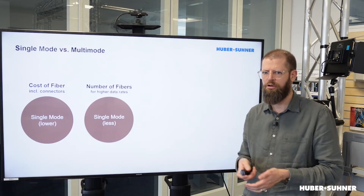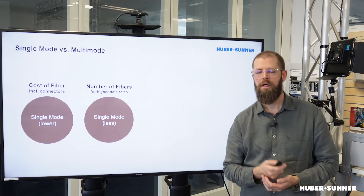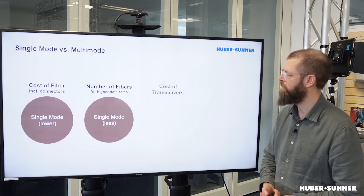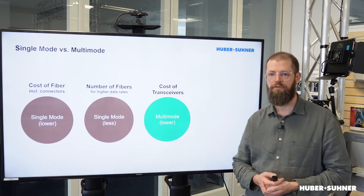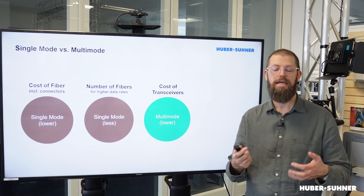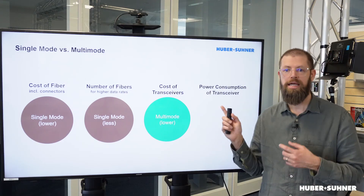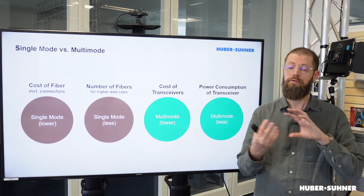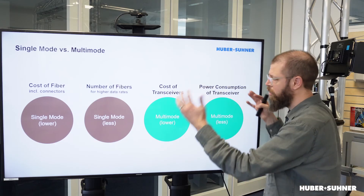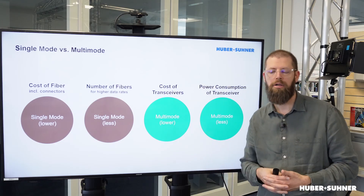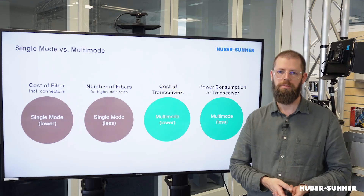At the moment it's not looking very good for multi-mode, but you need to look beyond the fiber cable itself to find out why multi-mode still has justification. Starting with transceiver cost: because we're using more cost-effective light sources, multi-mode transceivers cost less than single-mode ones. The other very important factor is power consumption — multi-mode transceivers consume less power than single-mode transceivers. Taking all of that together, it still makes economic sense to use multi-mode for shorter distances, and single-mode for much longer distances.